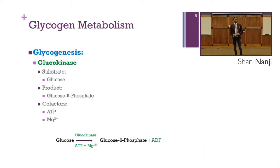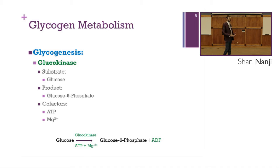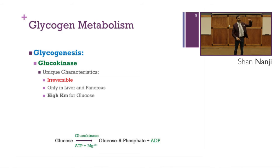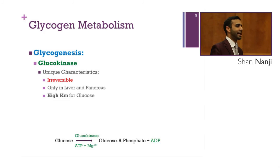Hexokinase is everywhere, while glucokinase is only in the liver and pancreas. For glucokinase, the substrate is still glucose, the product is still glucose-6-phosphate, the cofactors are ATP and magnesium, and it's also irreversible. It has a high KM for glucose, meaning this enzyme is only active when lots of glucose is around.